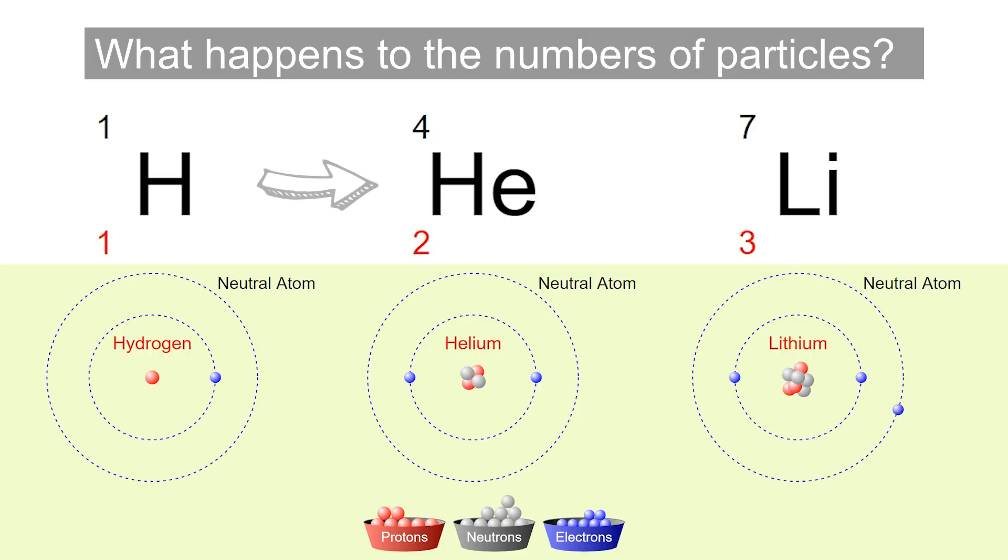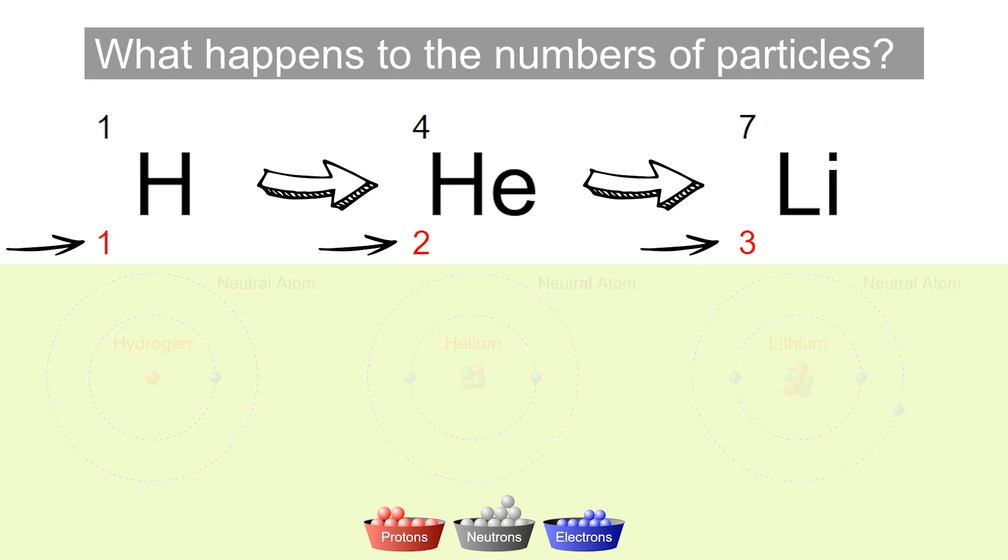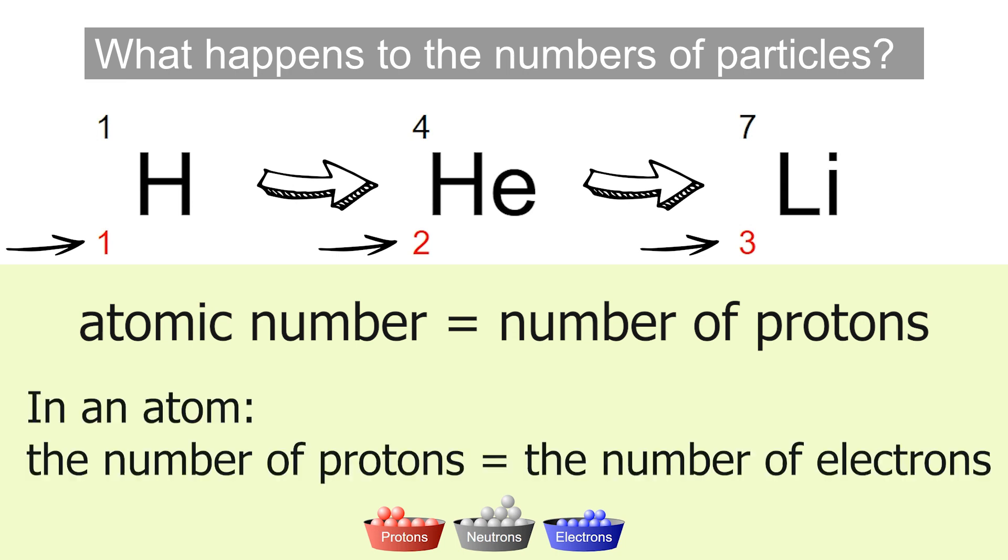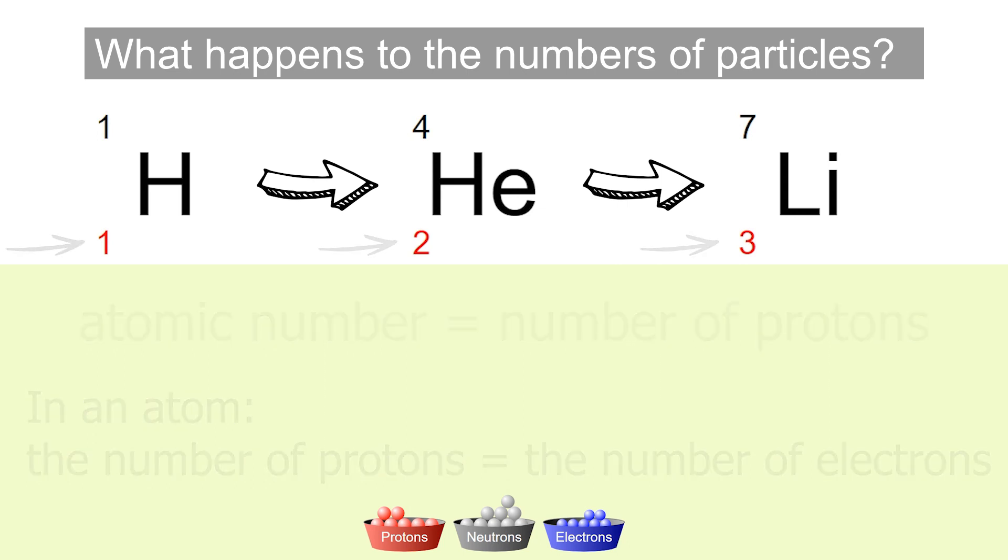What did you notice as we move from one element to the next? Well, moving along one element to the right meant that the proton and the electron number went up by one, didn't it? Well, that's because each element has a unique number of protons, and moving from left to right on the periodic table, across all of the elements, you'll see that their proton number always increases by one each time. We call this number the atomic number. The electron number also increases by one each time, and that's because there is always the same number of electrons as protons.